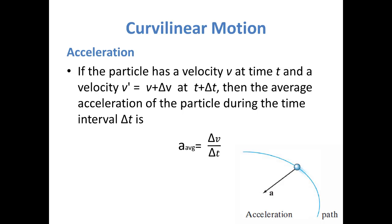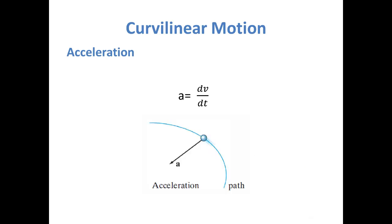For acceleration: if the particle has a velocity v at time t and a velocity v plus delta-v at time t plus delta-t, then the average acceleration of the particle during the time interval delta-t is delta-v divided by delta-t. The acceleration a equals delta-v divided by delta-t. We will use this expression further for problem solutions.